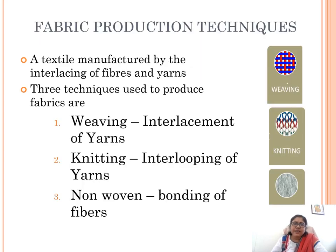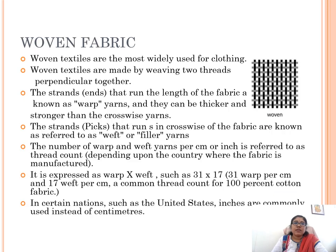Basically, the fabric production is done in three ways. First one is weaving, second one is knitting, and third one is non-woven. These three techniques are widely used all over the world. Weaving is the method of interlacement of yarns, knitting is inter-looping of yarns, and non-woven is binding of fibers. First, we are going to see about the woven fabric.